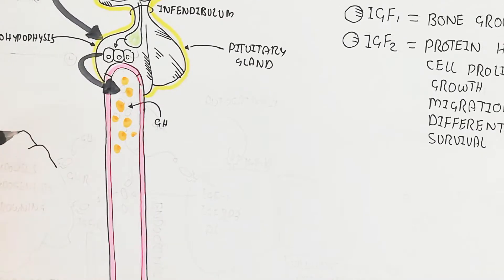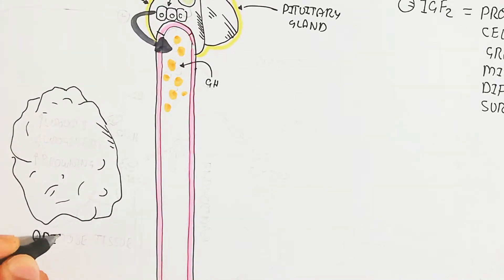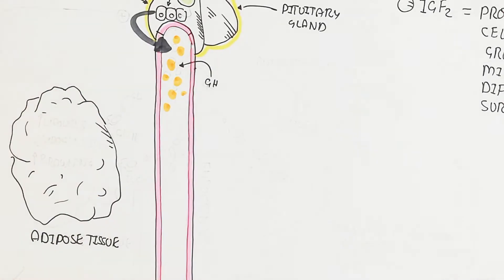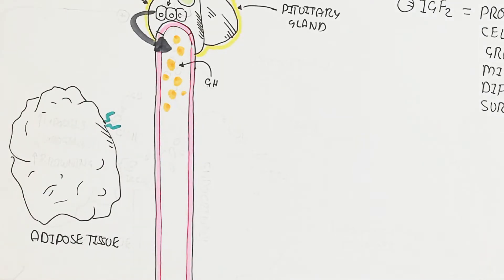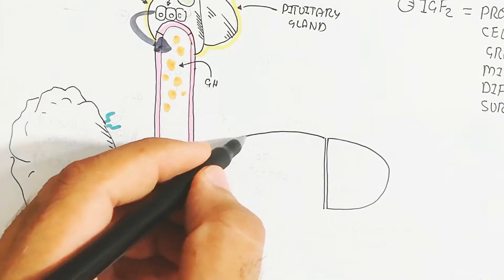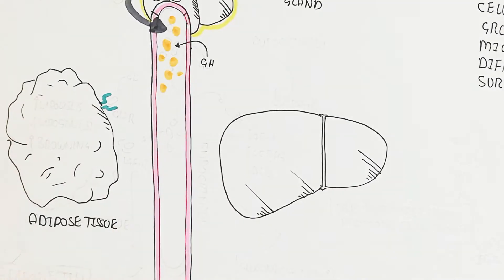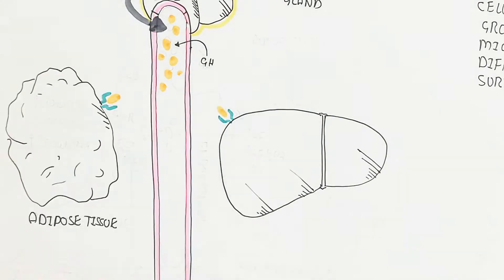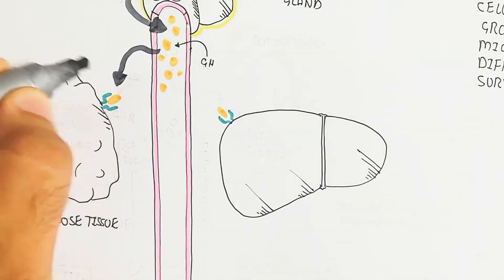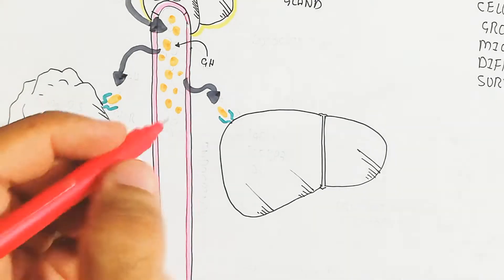Growth hormone enters the blood as an endocrine hormone. It is lipophobic, meaning it binds with a receptor. When growth hormone binds with the growth hormone receptor on adipose tissue, liver, and muscle, it triggers lipolysis — increasing lipolysis in the adipose tissue — while lipogenesis is decreased.